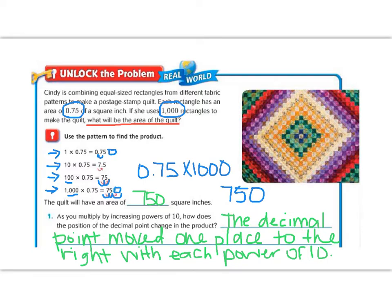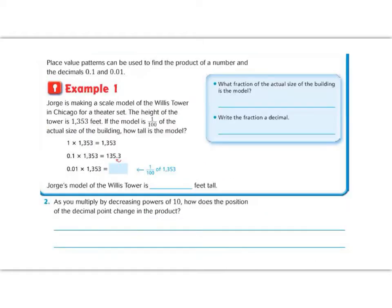Great job so far. Make sure all of this is written on your page, and let's continue on to example one. Example one says, George is making a scale model of the Willis Tower in Chicago. For a theater set, the height of the tower is 1,353 feet. If the model is one one hundredth of the actual size of the building, how tall is the model?